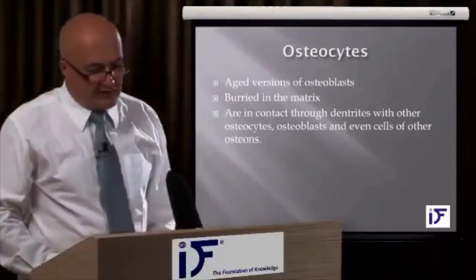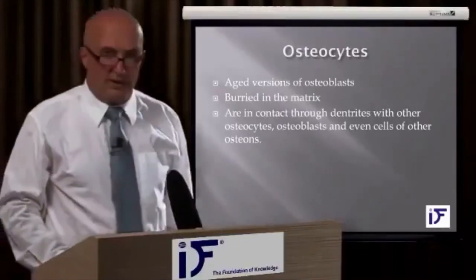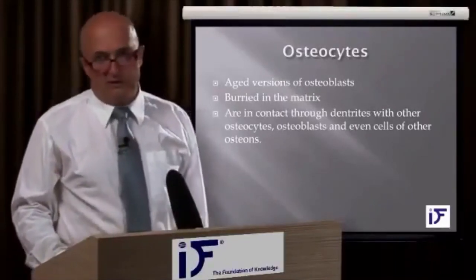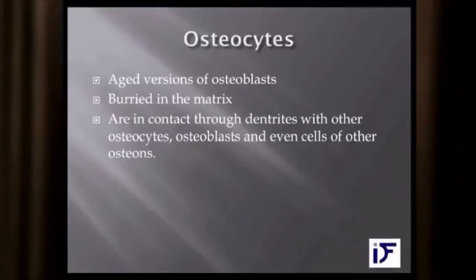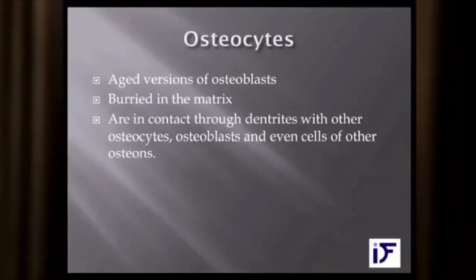Osteocytes are an aged version of osteoblasts. As bone develops and ages, osteoblasts get buried in the matrix, and these osteocytes have almost no metabolic activity because they are buried. They have no direct contact to the bone surface, but they have a lot of other purposes — they are in contact through dendrites with other osteocytes, osteoblasts, and even cells of other osteons.